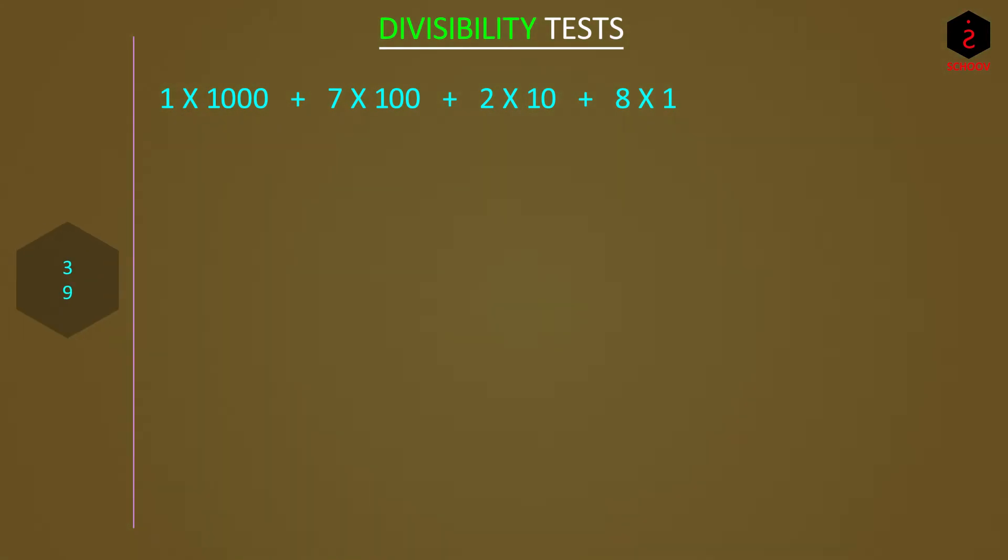Now 3 and 9. We know that 9 is divided by 3 and 9 is of course divided by 9. So let's try to write the expression in terms of 9. We can write 1000 as 999 plus 1, 100 as 99 plus 1, and 10 as 9 plus 1. So the expression becomes 1 x (999 + 1) plus 7 x (99 + 1) plus 2 x (9 + 1) plus 8.